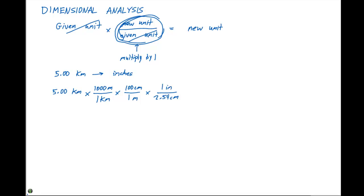There are 2.54 centimeters in one inch. Each time we're taking the given unit and converting to the new unit. Meters becomes our new given unit, which we convert to centimeters, then centimeters to inches.